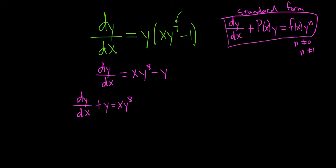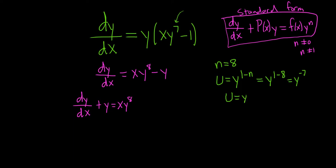The next step in solving a Bernoulli DE is to identify n. In this case n equals 8, and then we make a substitution. The formula is always u equals y to the (1 minus n), so u equals y^(1−8), which equals y^(−7).